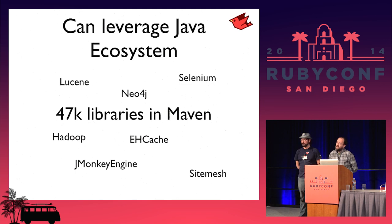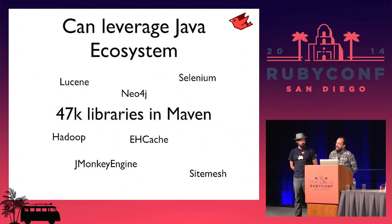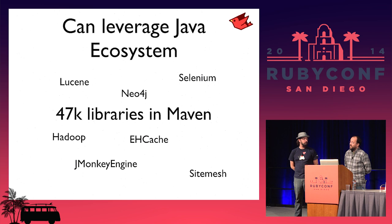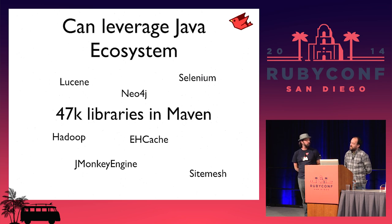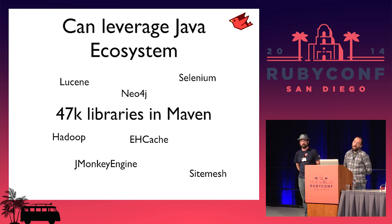Another major feature of JRuby is you can pull in any Java library and interact with it as if it was a Ruby library. You'll think you're actually calling a Ruby class, but in fact it will be a Java class. Imagine you're trying to do something with PDF generation and the Ruby gem doesn't quite do it — you can pop over and try IText, a popular Java PDF library, and probably get what you need.